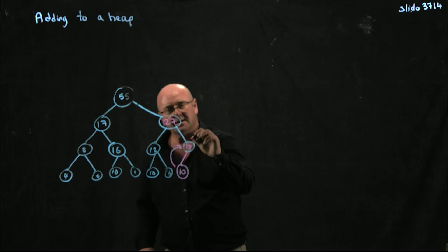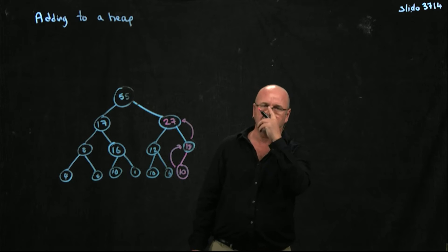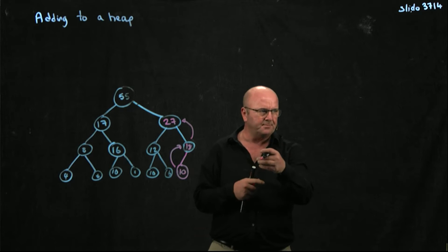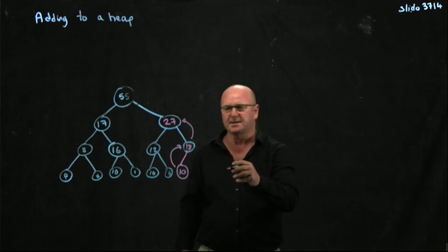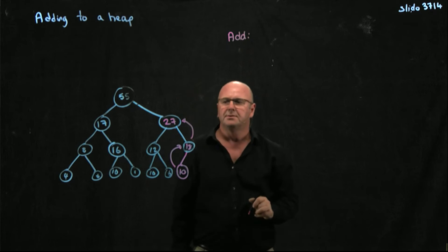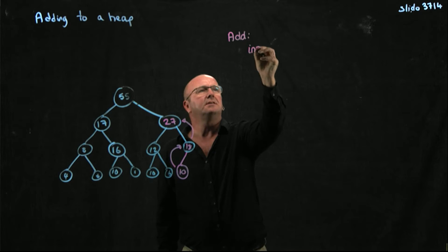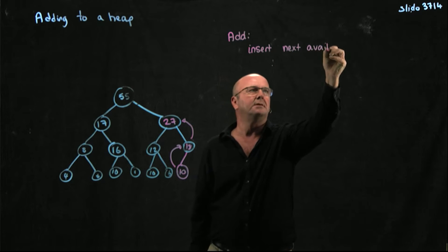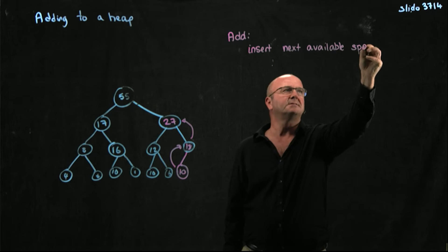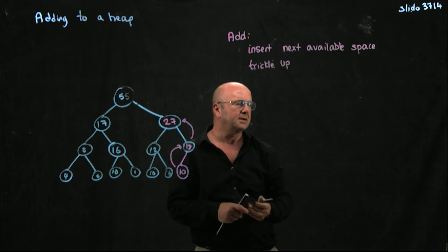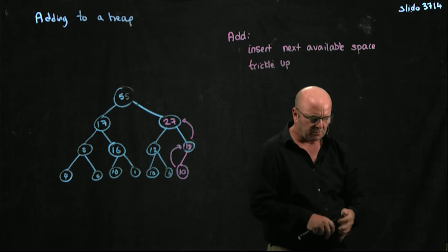So by continually checking to see whether the node you've added is larger than the parent, and if it is, you just swap them, you then fix the heap. And this is called, so to add something, you insert the next available space, and then you trickle up. So you swap the elements with their parents.